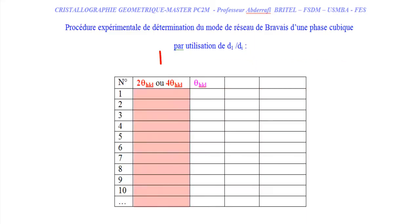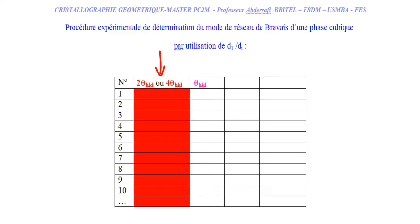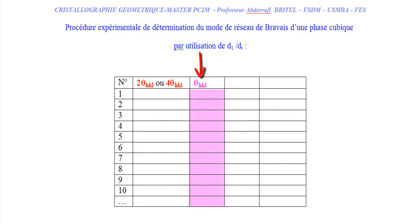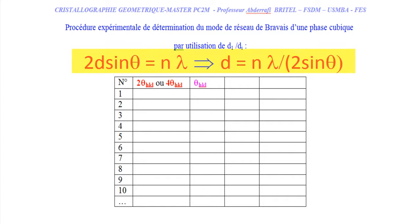Once we have the θ or 4θ angles, we list the diffraction angles θ from smallest to largest. From these θ values, we calculate the interplanar distances using Bragg's relation: 2d sinθ = nλ.